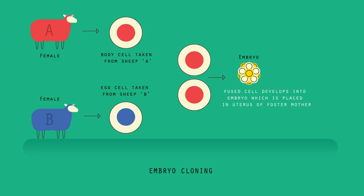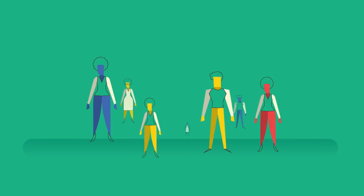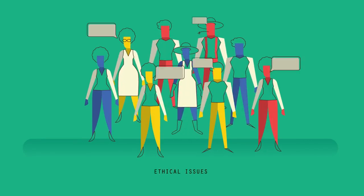These embryo cells contain the same genetic information as the adult body cell. When the embryo has developed into a ball of cells, it is inserted into the womb of an adult female surrogate to continue its development. Three different adults are used in total. The baby born will be a clone of the adult that donated the body cell, because it has the same DNA.